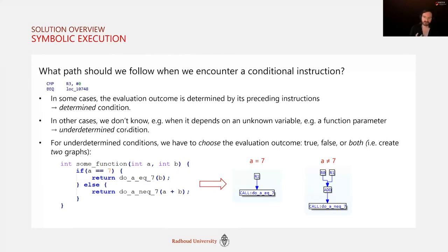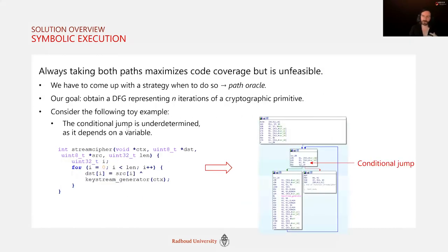When extracting our DFG we are often faced with conditional instructions and the choice of which path to take. We distinguish determined conditions — where the outcome is determined by preceding instructions — from underdetermined conditions where it is not. For the latter we must pick an evaluation outcome ourselves: true, false, or both, in which case we create two graphs. Always taking both maximizes code coverage but is unfeasible in practice, so we have to develop a picking strategy in the form of a path oracle.